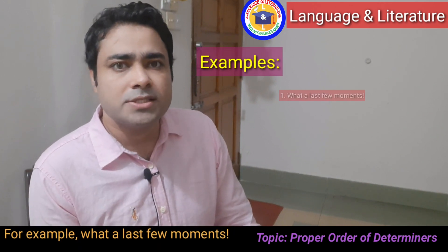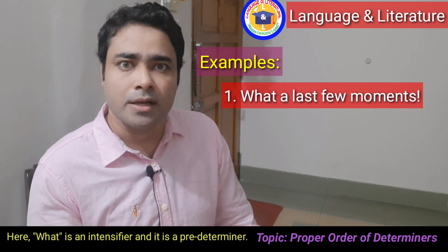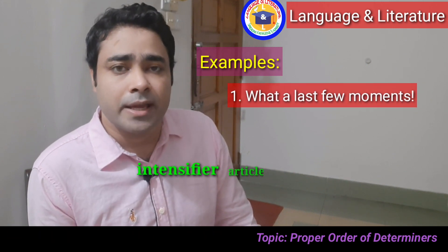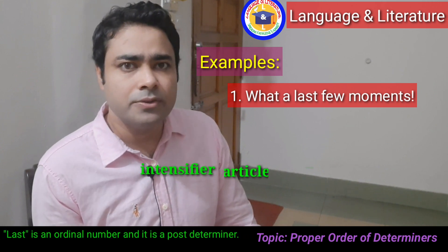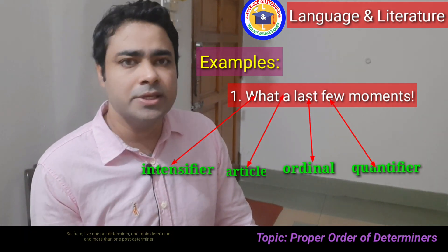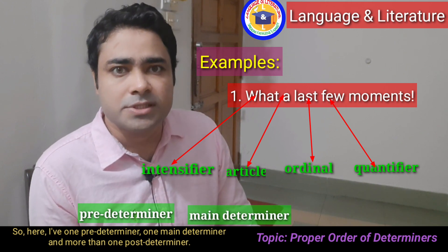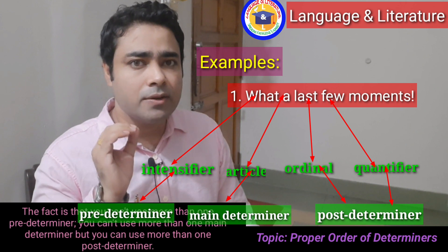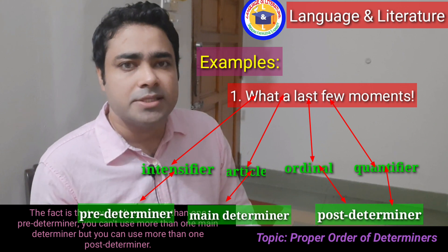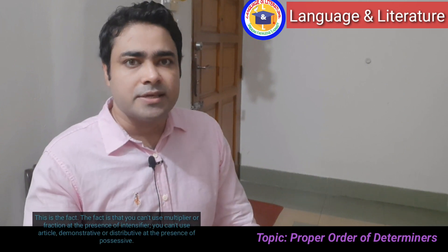For example: what a last few moments. Here, what is an intensifier — it is a predeterminer. A is an article — it is the main determiner. Last is an ordinal number — a post determiner. Few is a quantifier — also a post determiner. So here I have one predeterminer, one main determiner, and more than one post determiner. You can use more than one post determiner.